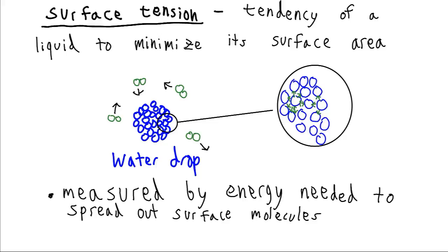The actual surface tension is measured by the energy which is needed to spread out this surface and flatten this droplet. And this is going to increase with intermolecular forces. Things with very strong forces tend to have very high surface tension and vice versa.